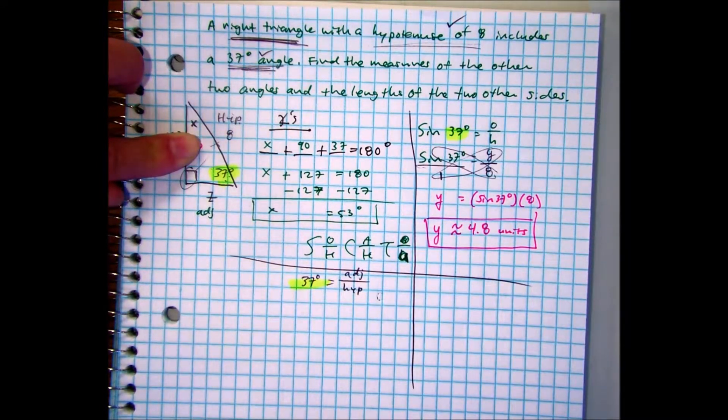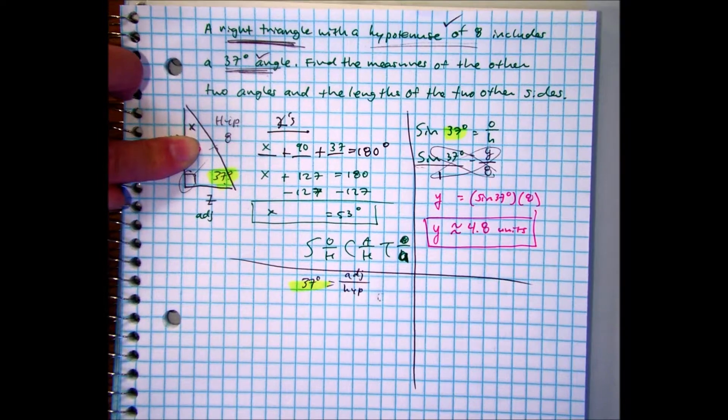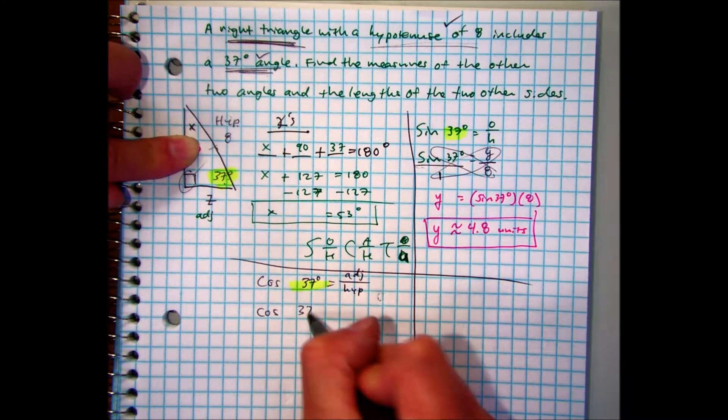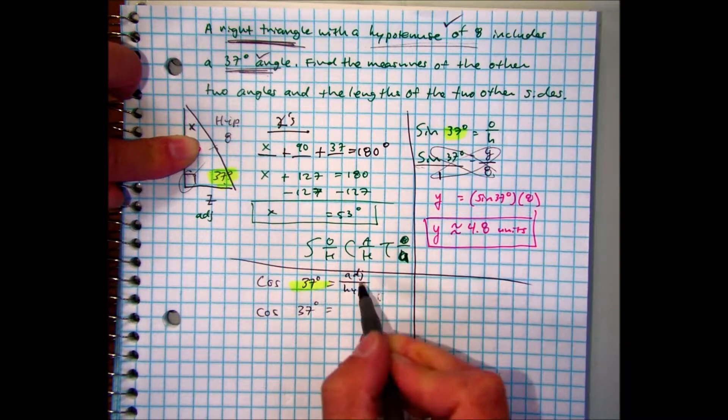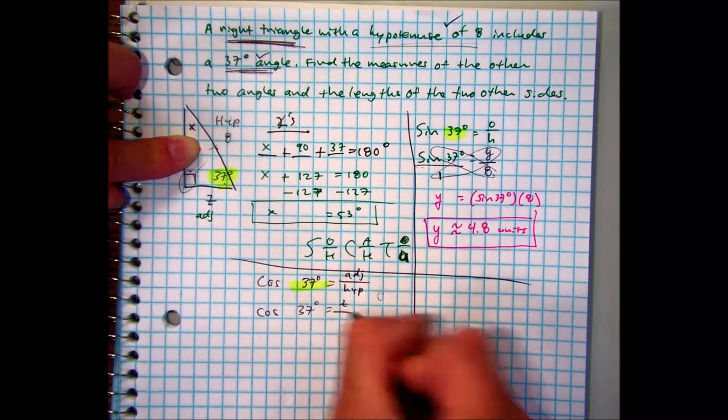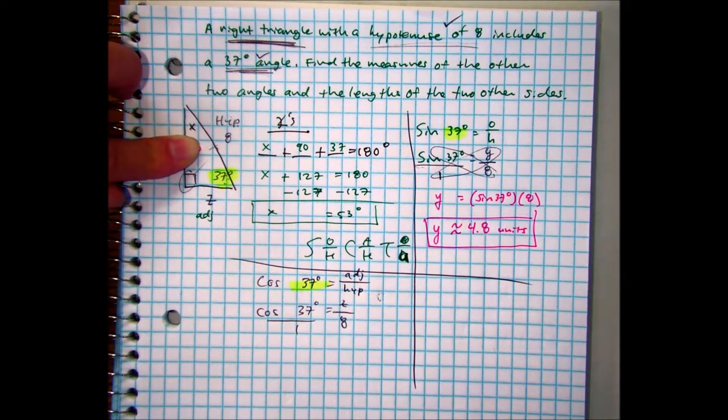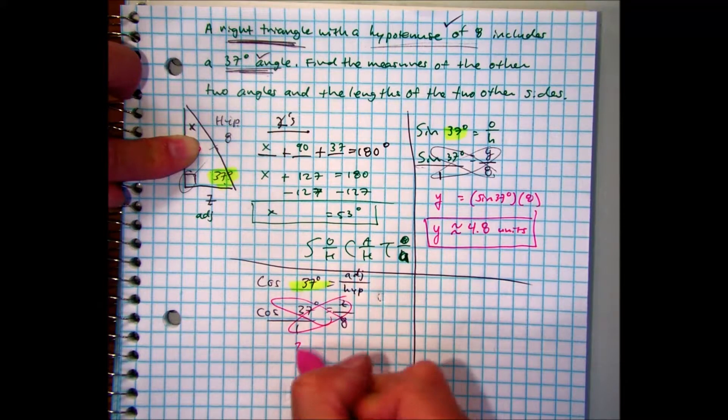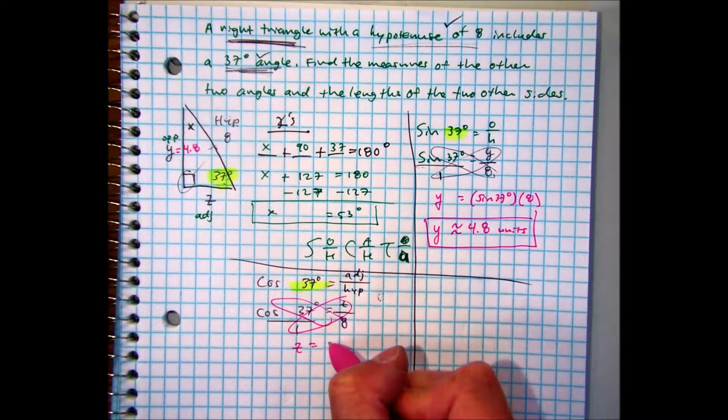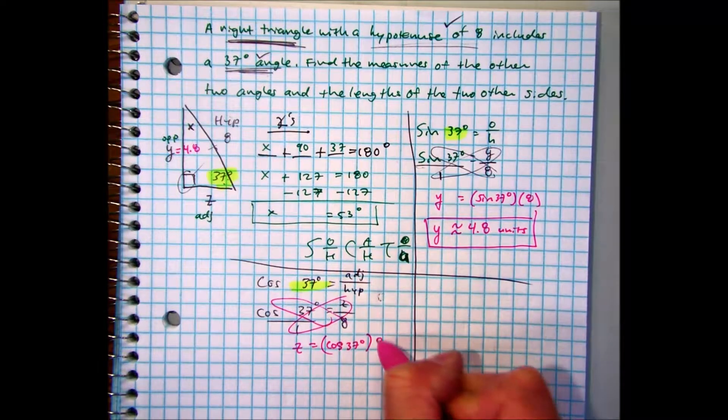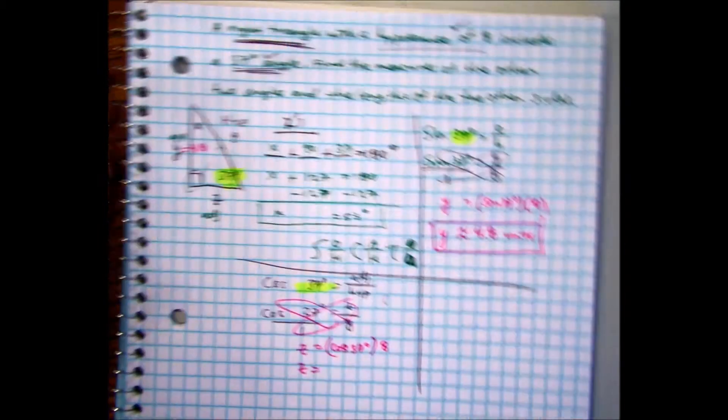And now I have the adjacent over the hypotenuse. Partner A to partner B, which trig ratio is that? Cosine. I heard cosine. So cosine of 37 degrees, adjacent which is z, over the hypotenuse 8. Same thing, cross multiply.